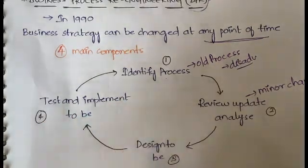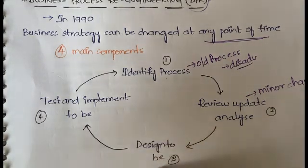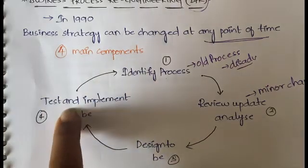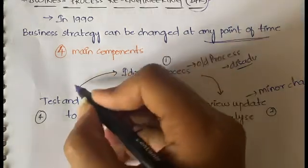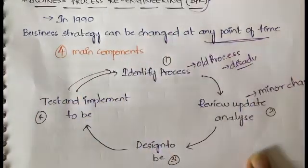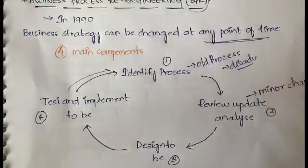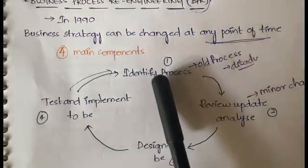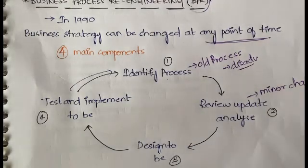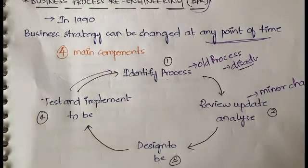Next is test and implement to-be. Whatever design we have created is tested. If the test gives good results, you can implement it into your organization. If the test results are not good, it goes back to the first step and the cycle continues again.